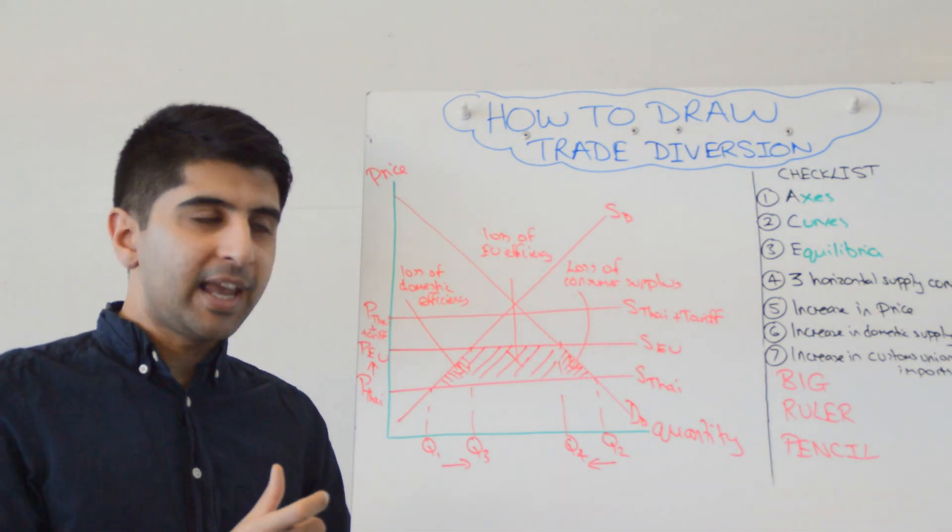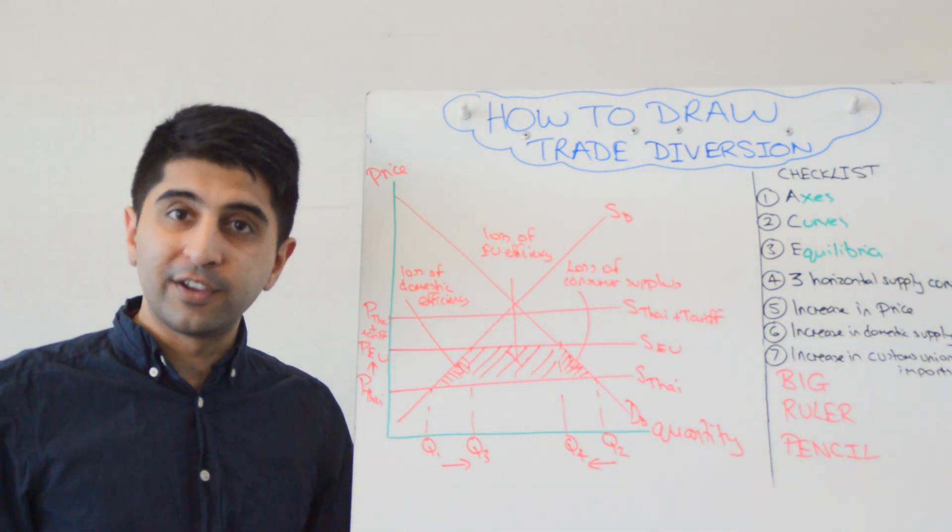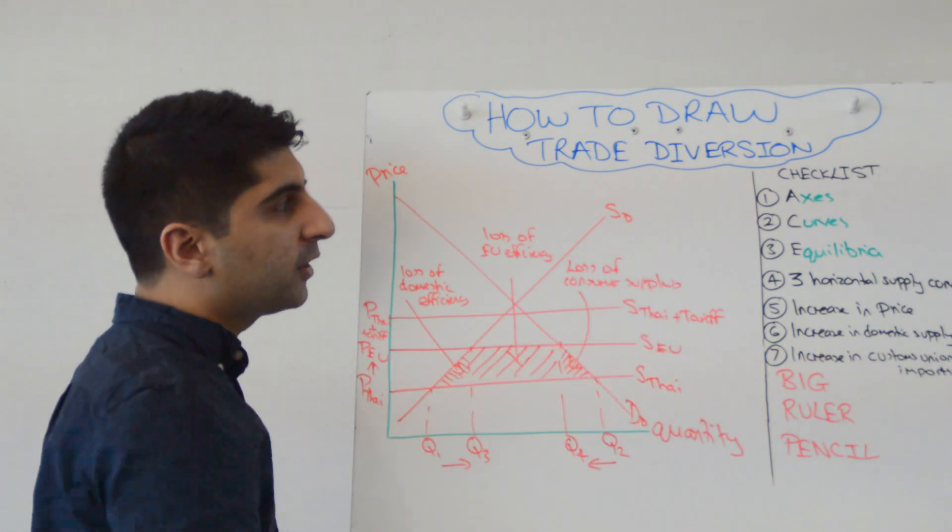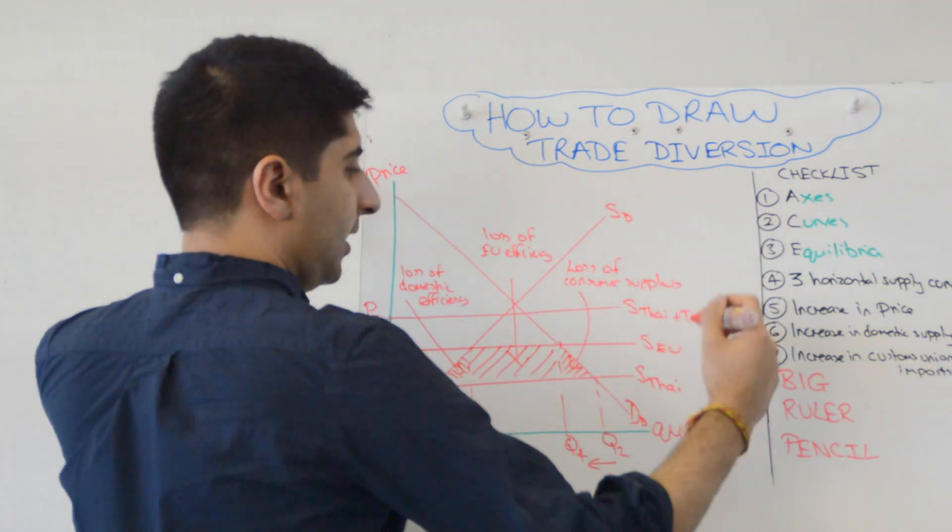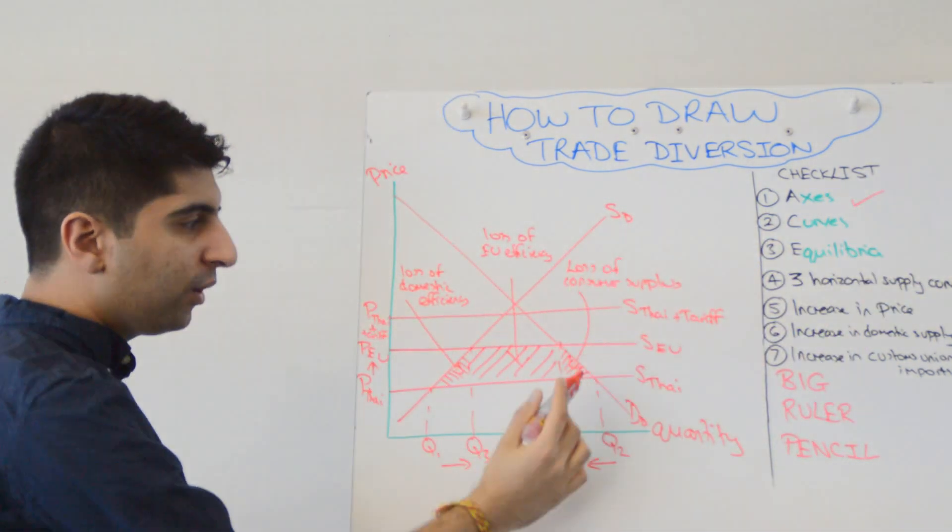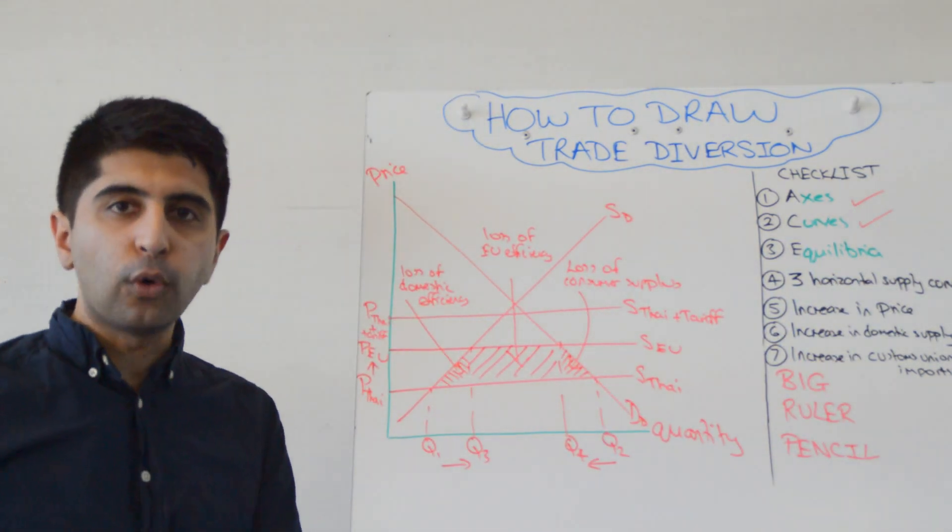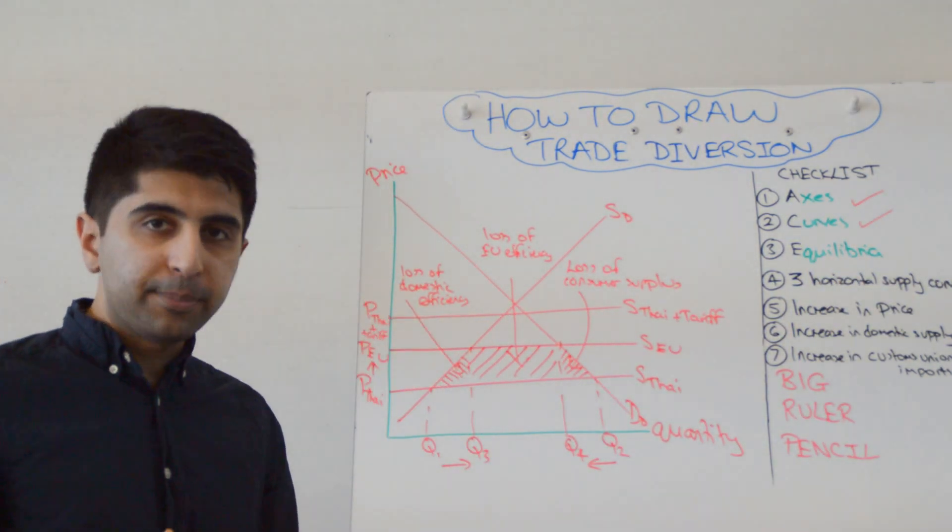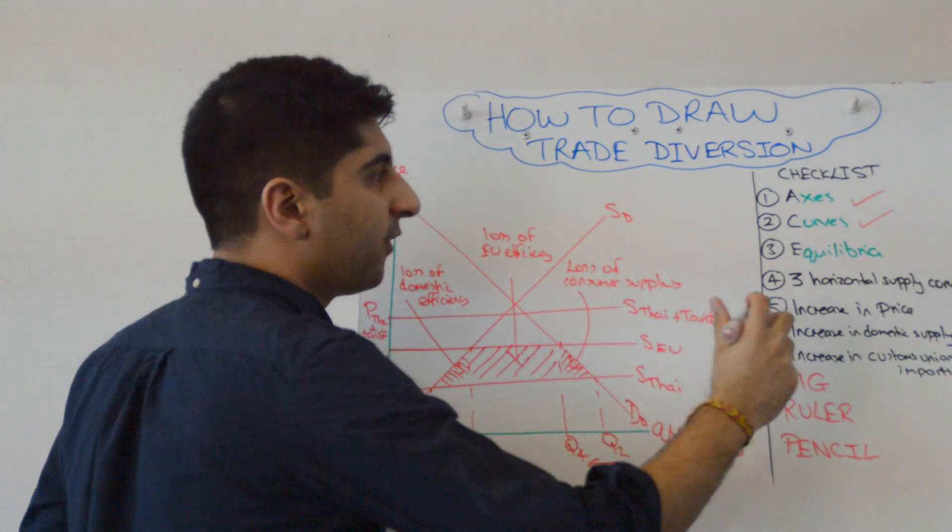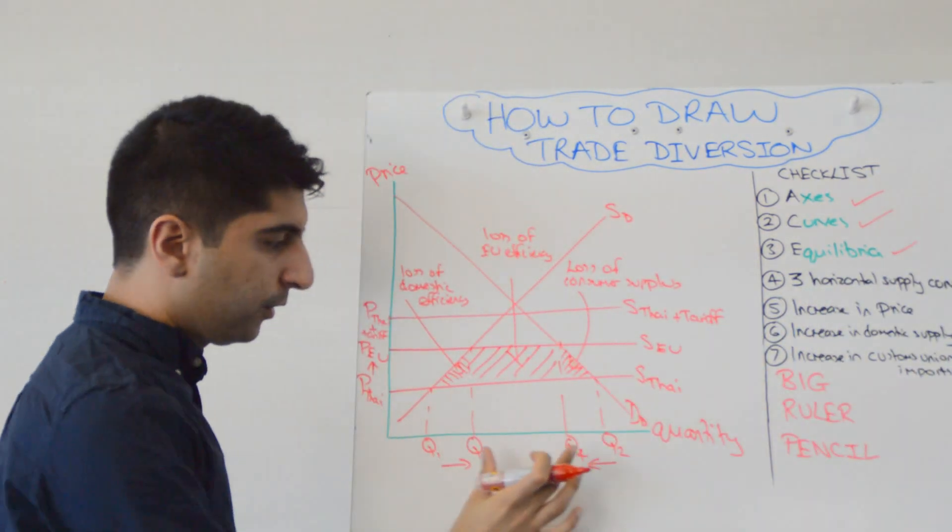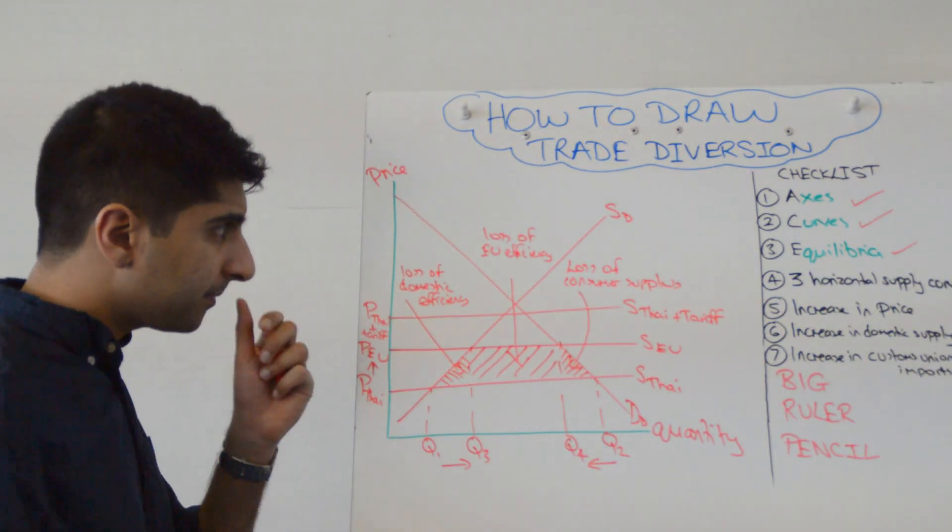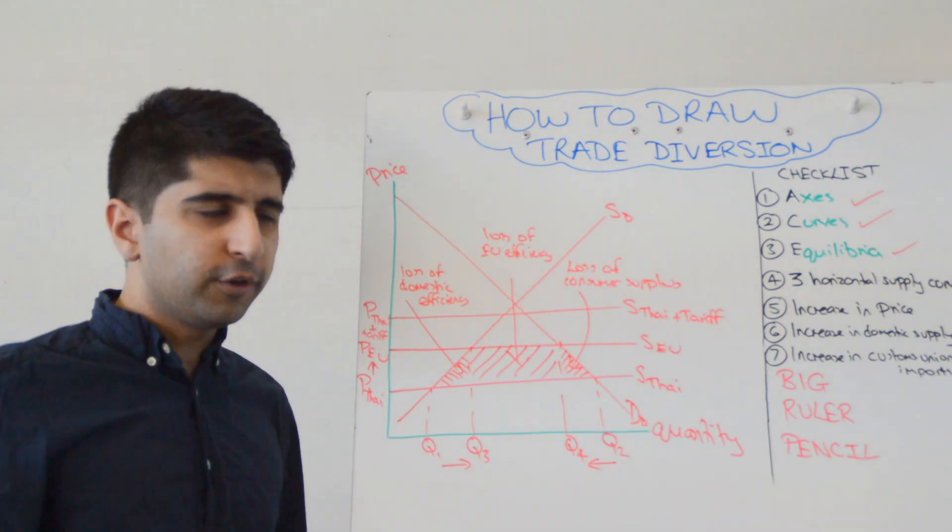But if you break it down in the stages that I've just done, it's not too difficult. It requires practice. Let's move to our checklist. Have we labeled our axis? Yeah, we have. Have we labeled all of our curves, lots of curves here? We have, importantly. Have we labeled all of our different equilibria? Absolutely. With quantities and prices very, very clearly labeled and arrows to show exactly what's going on.